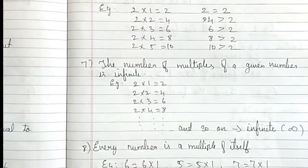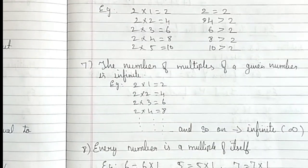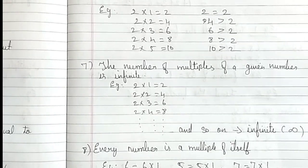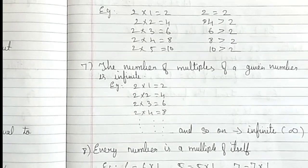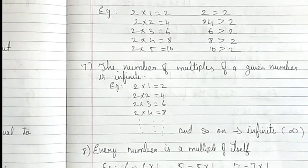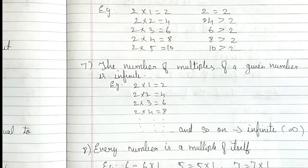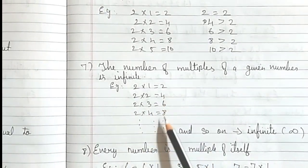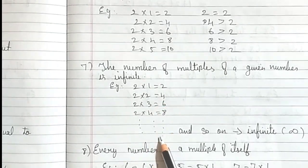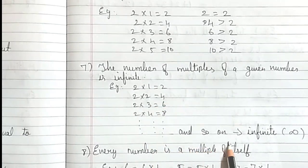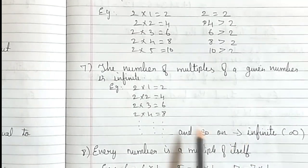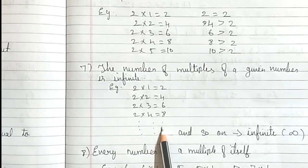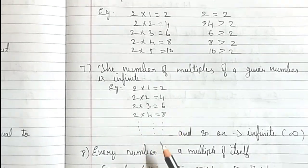Seventh: The number of multiples of a given number is infinite. We have learnt that the number of factors of a given number is finite — that is countable. But the multiples of a given number are infinite, that is uncountable. The 2 times table will never end; it goes on and so on. That is infinite, that is infinity. So the number of multiples of a given number is infinite.